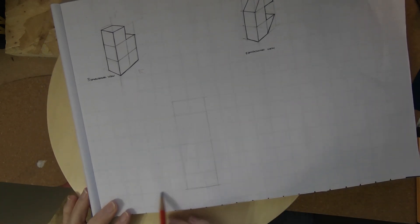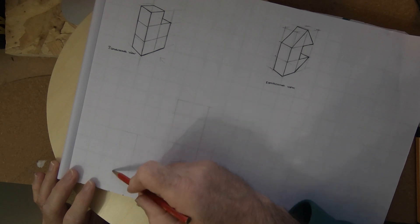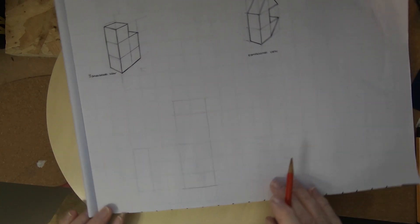The side view viewed from the left hand side, I'm just projecting lines across at the moment. I'm going to sketch in a rectangle that's three squares high and one square left to right, thick or wide.